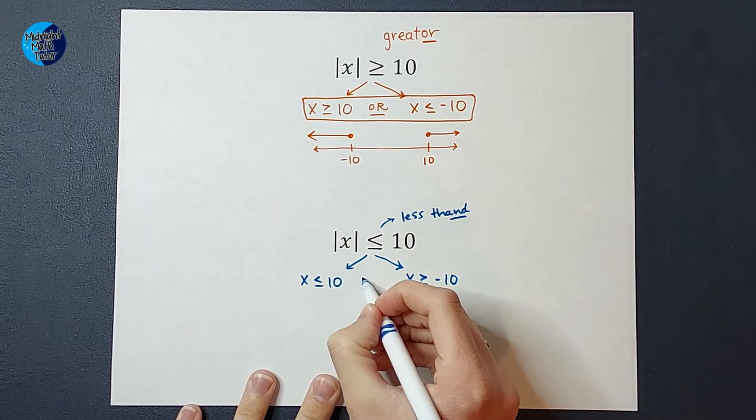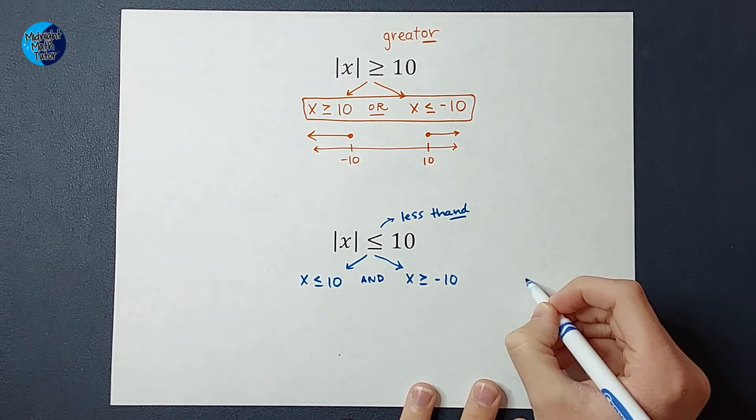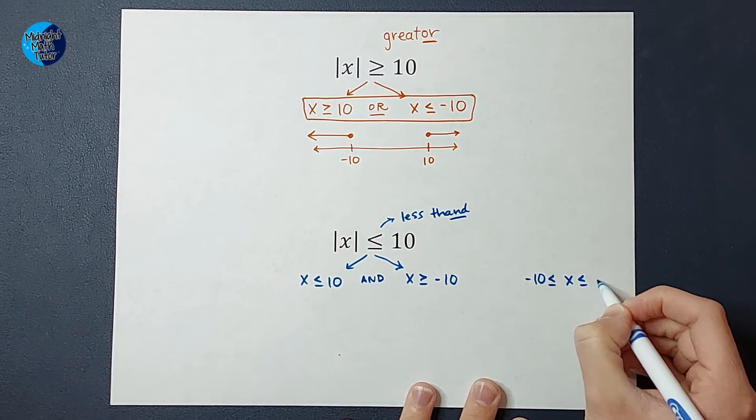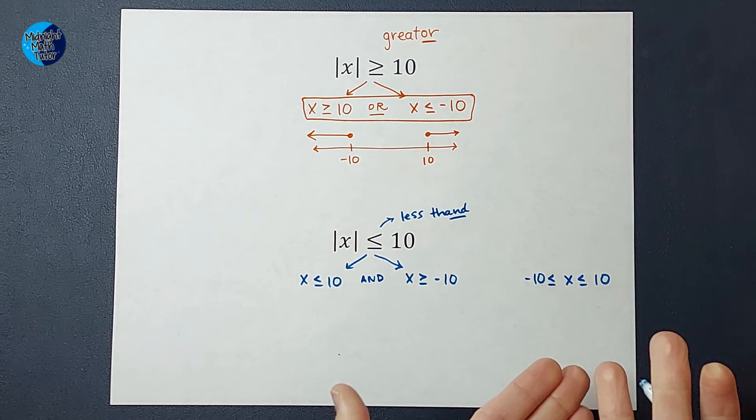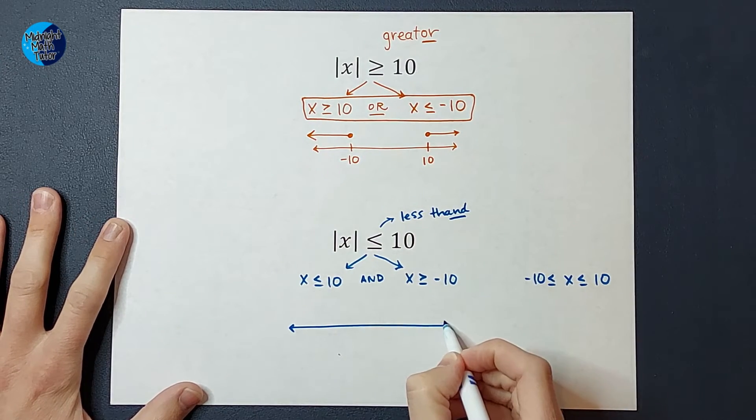So I know this is going to be an and inequality that I could write like that, or I could be a little fancy if I wanted and have it all together. And I could write it like that. Great. There's my answer. But why is that my answer? Well, again, let's go ahead and draw our number line.